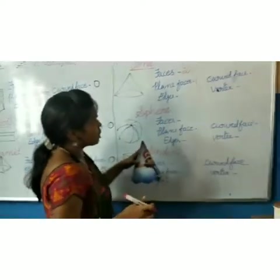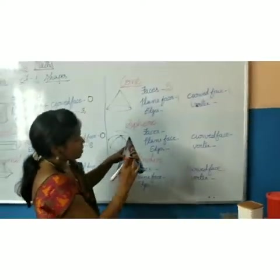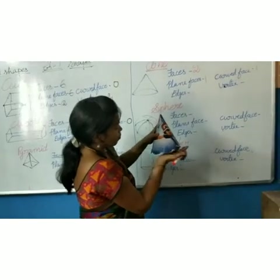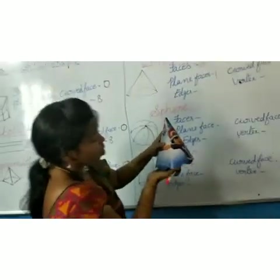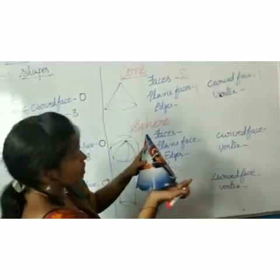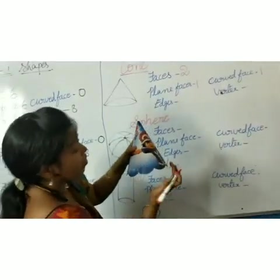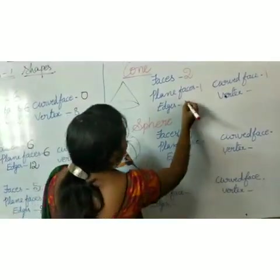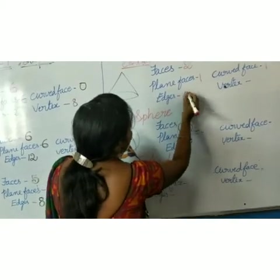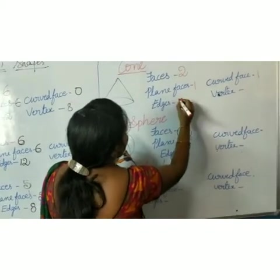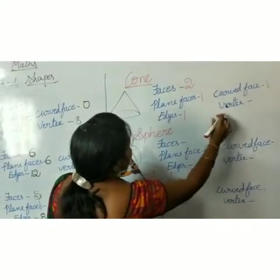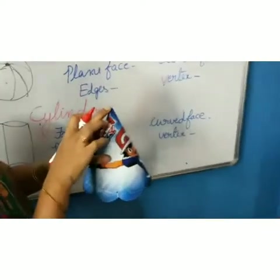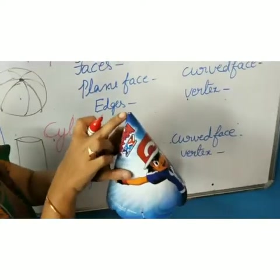Is there an edge, children? See, the face where they meet, the point is called edge. This is the curved edge. How many? One. How many? One.